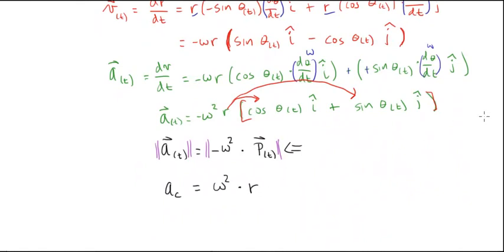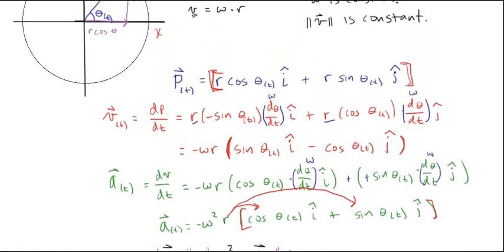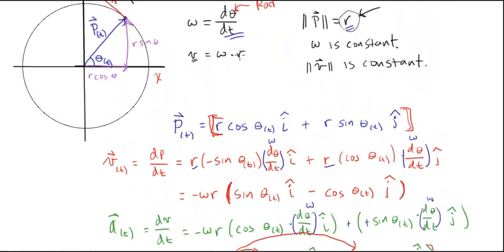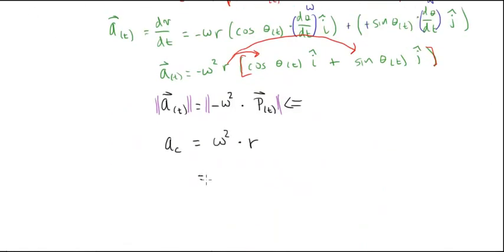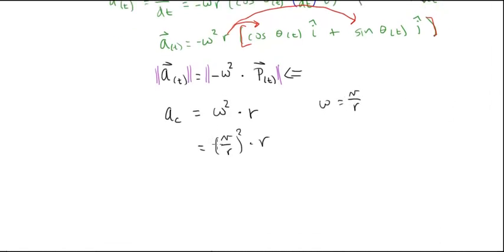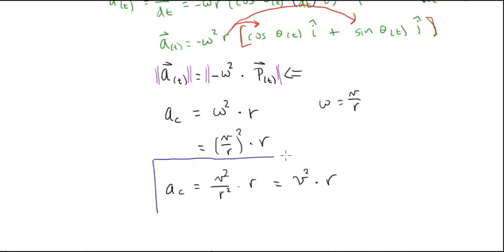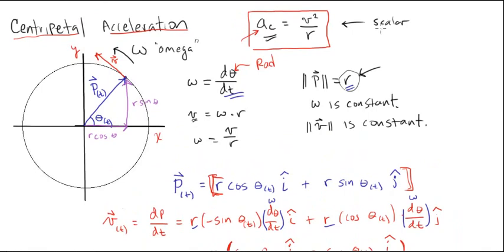That looks closer to where we're going. I want a v in there, and I remember v = ω·r, which means ω = v/r. Substituting: a_c = (v/r)² · r = v²/r² · r = v²/r. And there it is! That's the centripetal acceleration equation derived: a_c = v²/r.